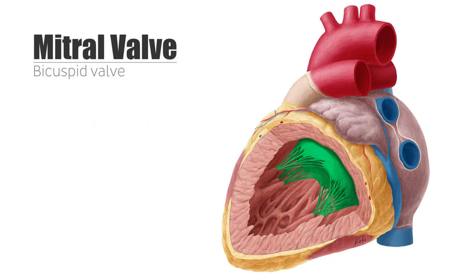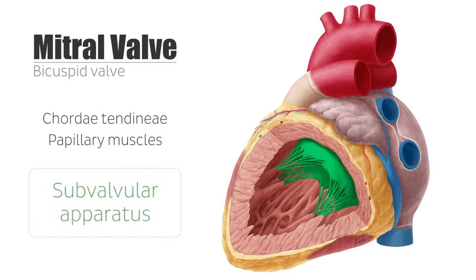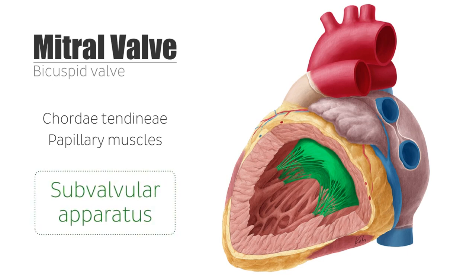The atrioventricular valves attach to the ventricular walls via the chordae tendineii, which in turn attach to the papillary muscles so that the cusps are held tense and don't invert into the atria. This extended attachment of the chordae tendineii and the papillary muscles is known as the subvalvular apparatus.